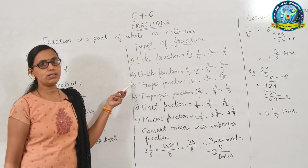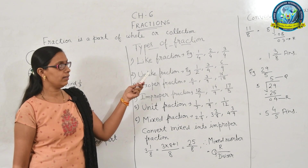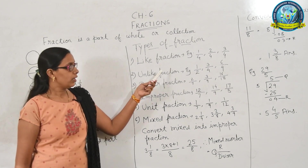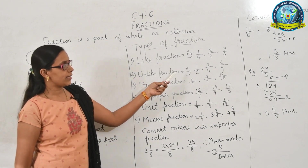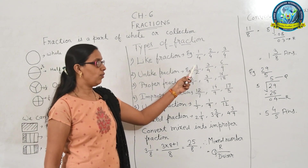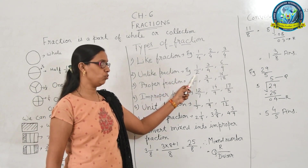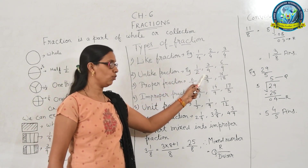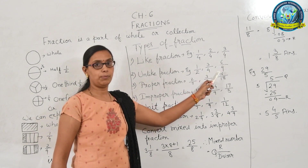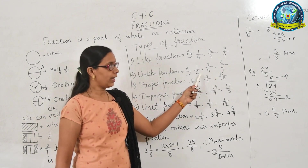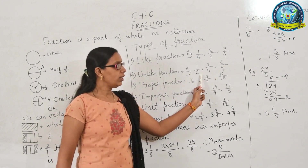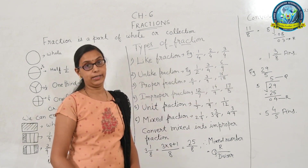The next one is unlike fractions. Here are examples of unlike fractions: 1 upon 2, 2 upon 4, and 6 upon 9. All the denominators are different.